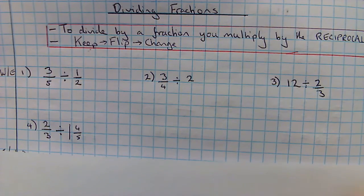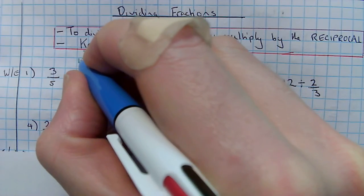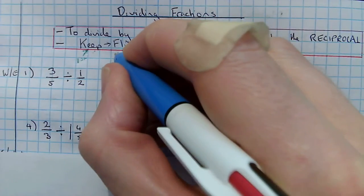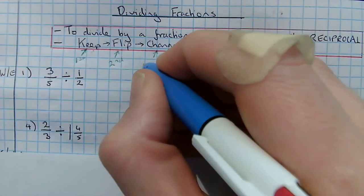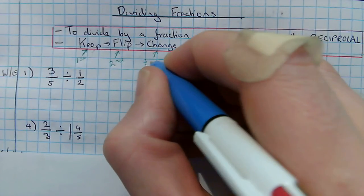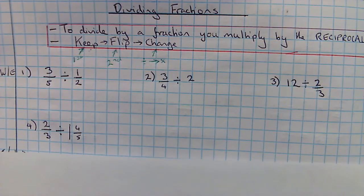So let's just annotate that. So keep refers to our first. Flip refers to our second. And change means divide becomes a times. So, let's have a look.